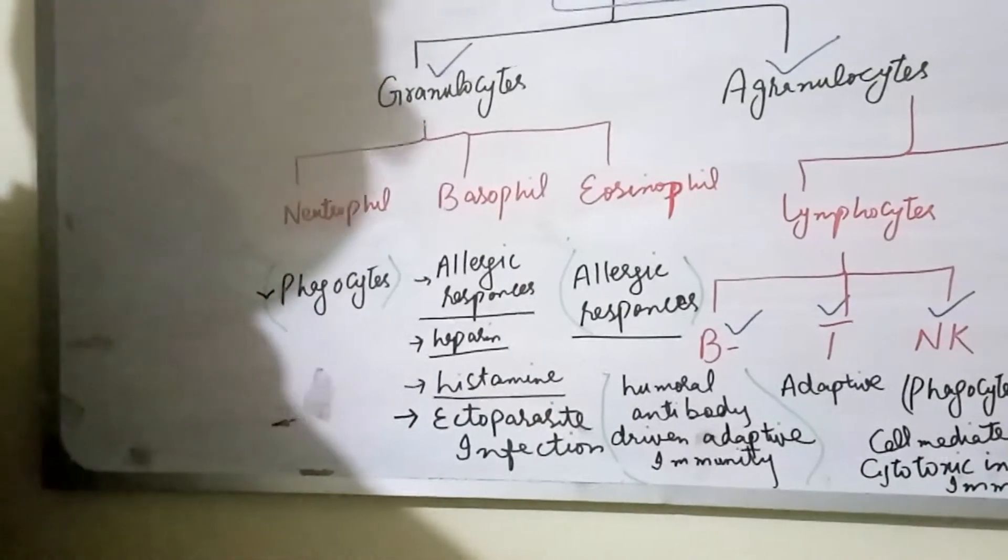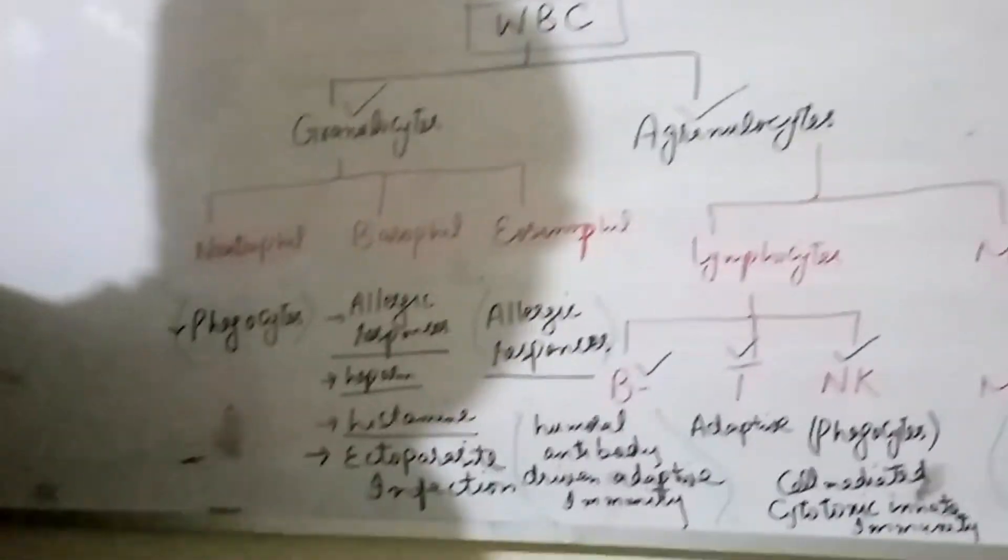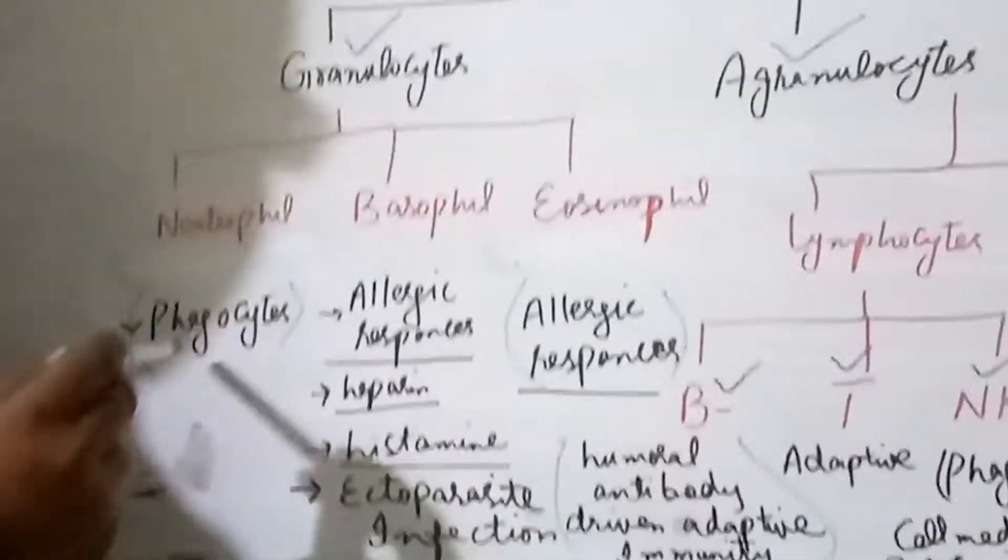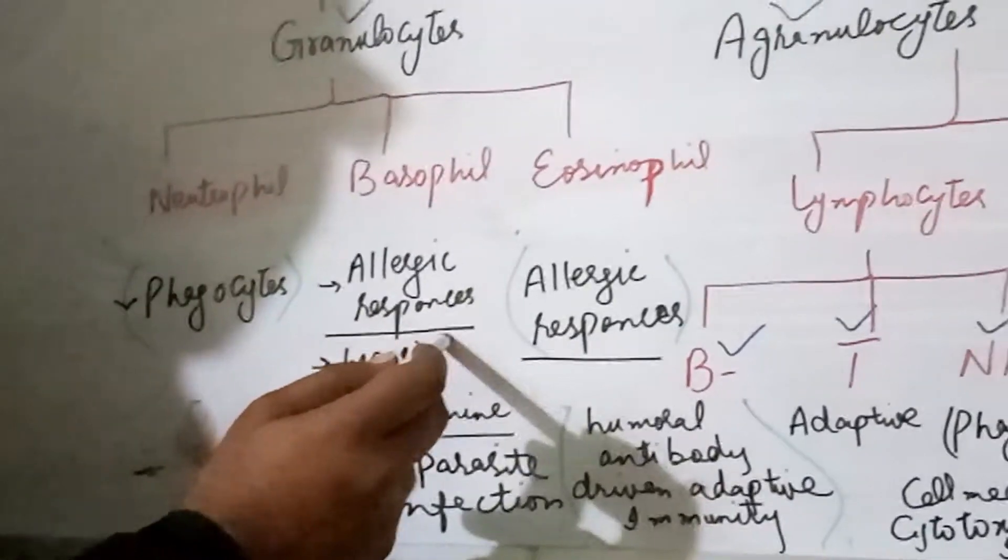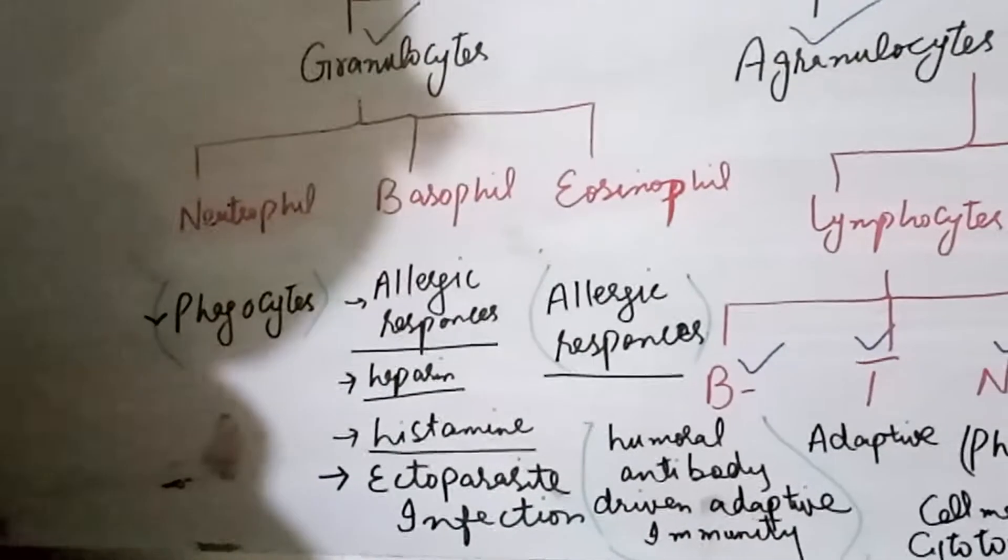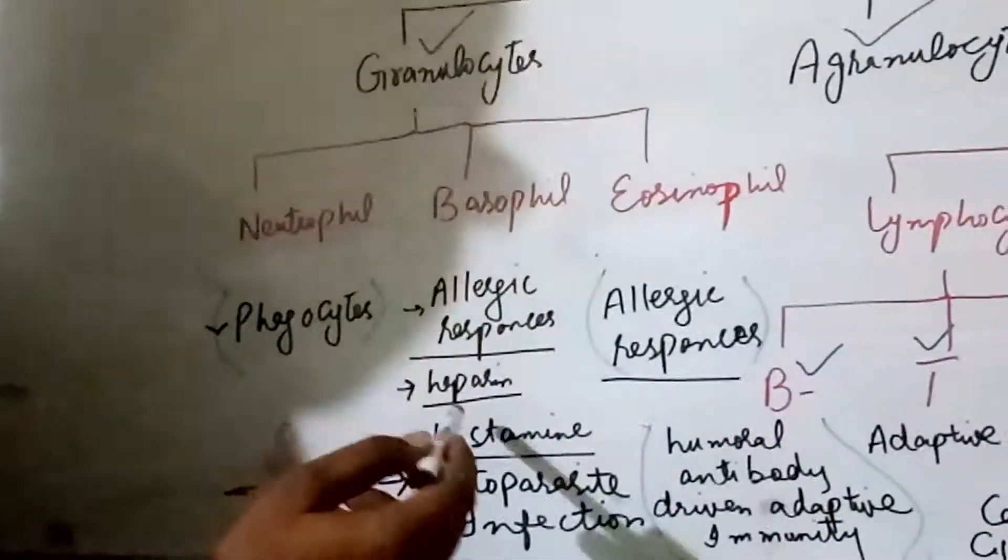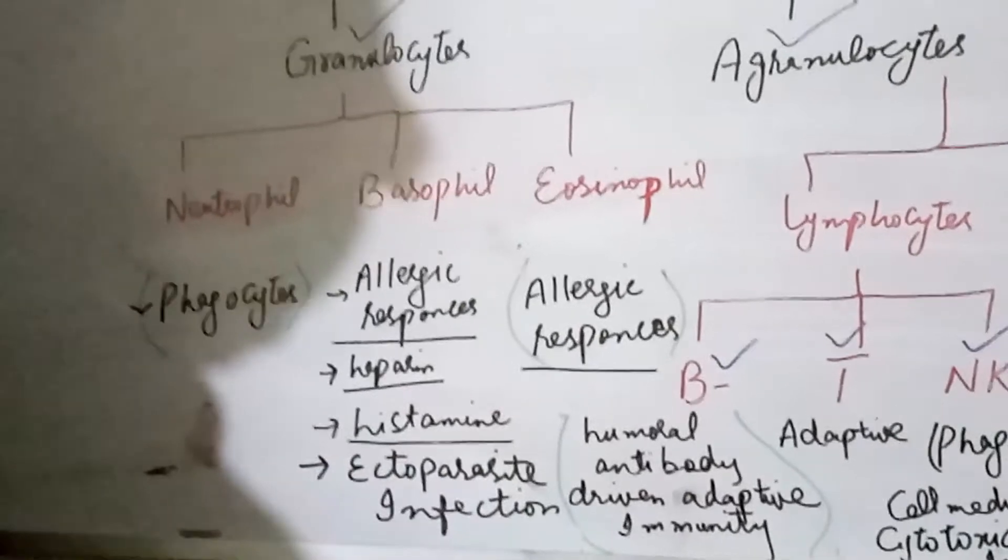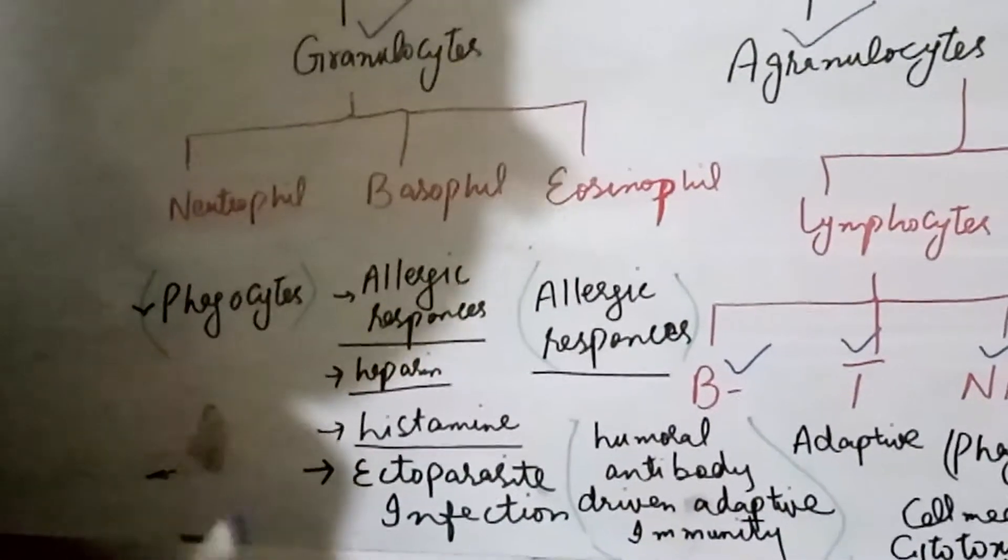Granulocytes are further subdivided into three types neutrophils, basophils and eosinophils. Neutrophils are for the phagocytic response while basophils are for the allergic response. They produce heparin which serves as a natural anti-coagulant present inside the blood. They produce histamine which is basically a vasodilator. It dilates the blood vessels for the proper flow of the blood.